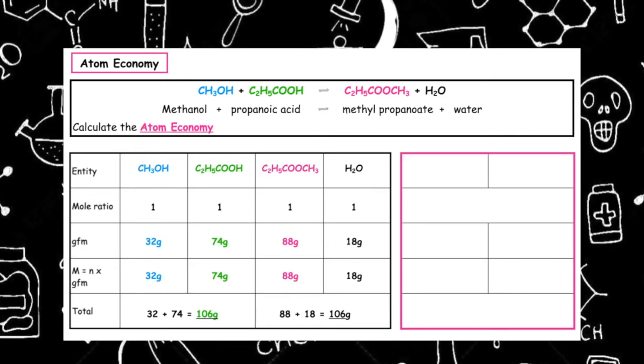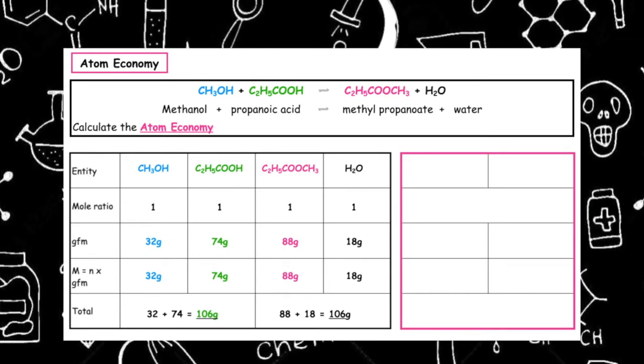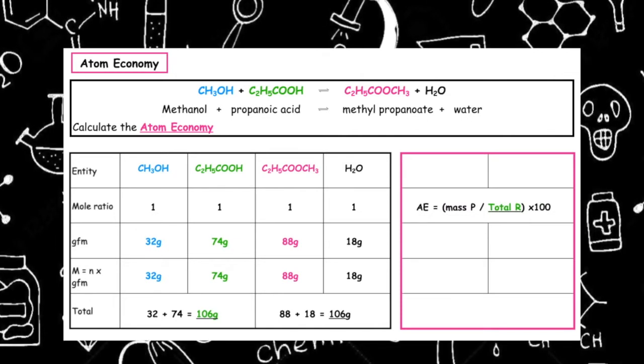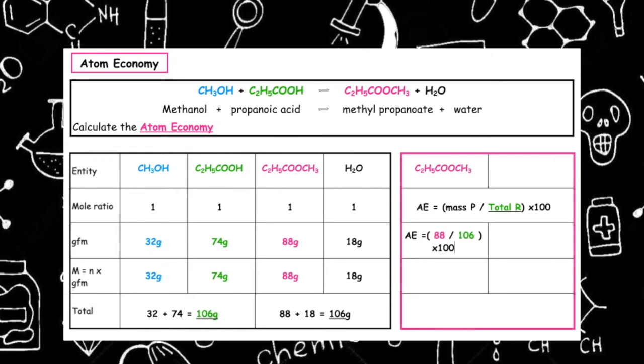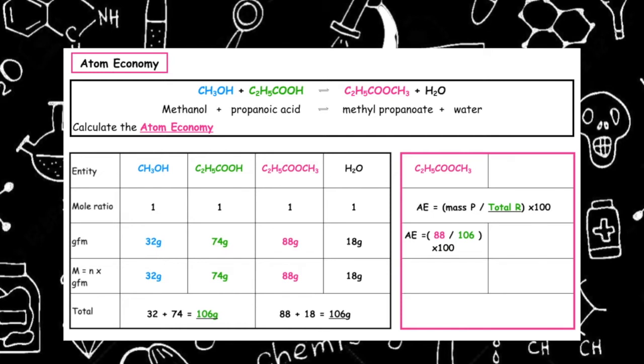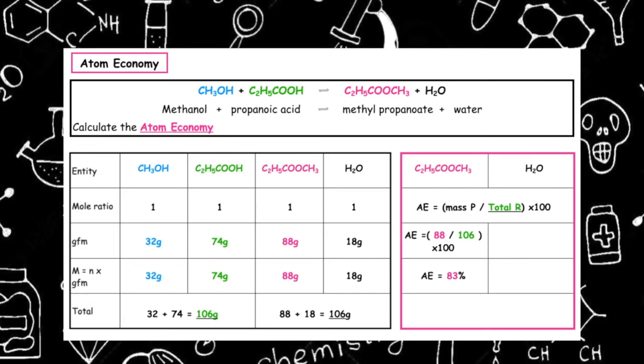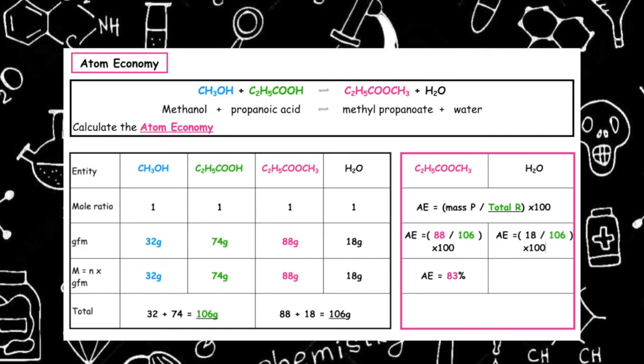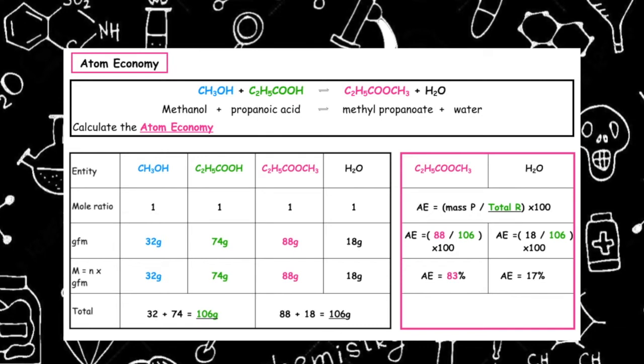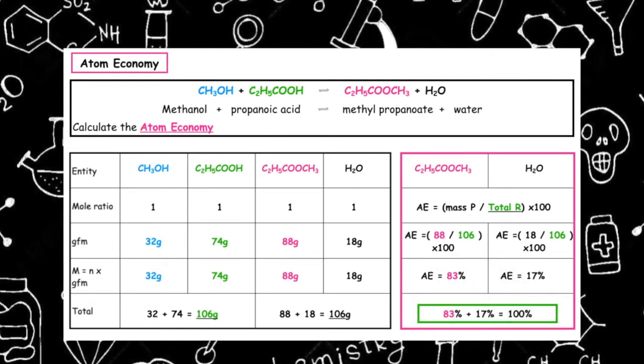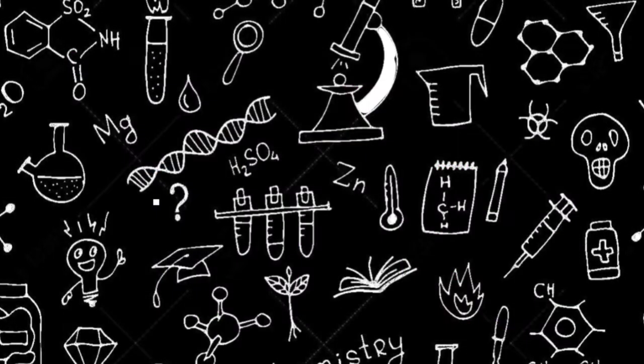So to calculate the atom economy, we have to write out the formula which is the mass of our product over the total reactants times by 100. So for methyl propanoate, that would be 88 over a total of 106 multiplied by 100, would give us an atom economy of 83 percent. If we were to do the same for the water, we would have the mass of water which was 18 divided by the total reactants which was 106 multiplied by 100, and that would give us an atom economy of 17. To double check your answer, 83 plus 17 gives us a total of 100 percent, meaning that all our atoms have been accounted for.